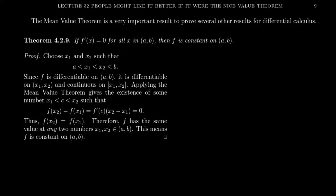First, kind of like when we proved the mean value theorem — we first proved Rolle's theorem and then the mean value theorem, where Rolle's theorem had the assumption that the starting and endpoints were the same, which tells us the average rate of change was zero. So let's first assume that the derivative is zero. If a function's derivative is zero on some open interval a to b, that means the function must be constant. We know that constant functions have zero derivatives. This theorem gives us the converse: if your derivative is zero, then you must have been a constant.